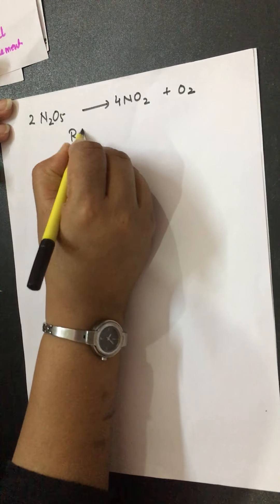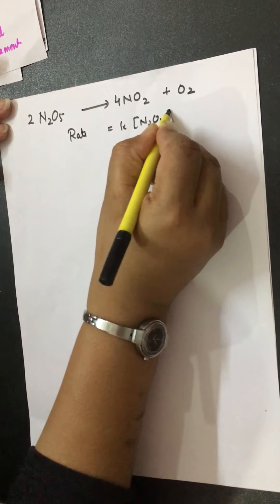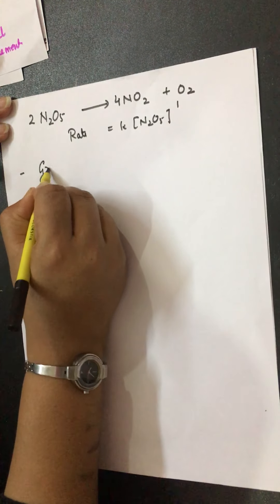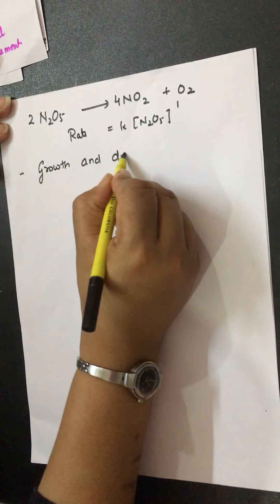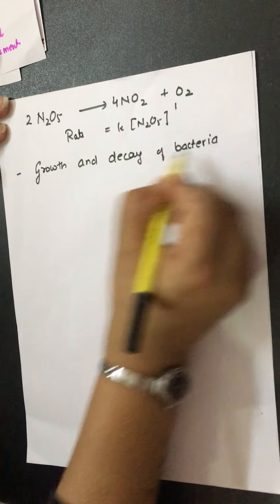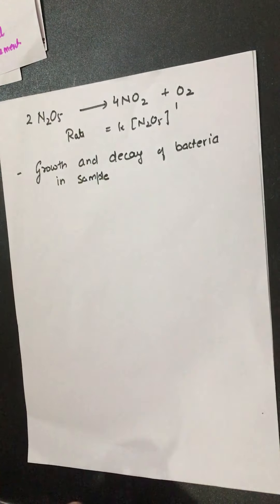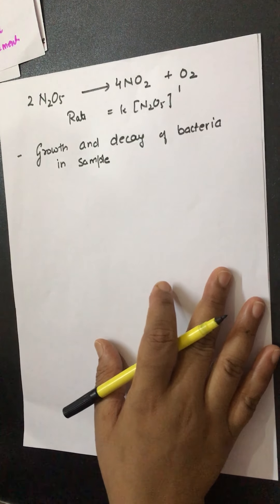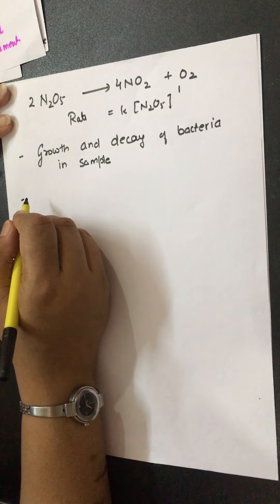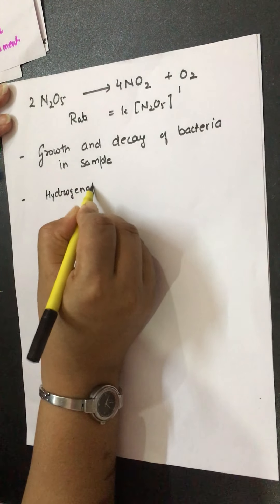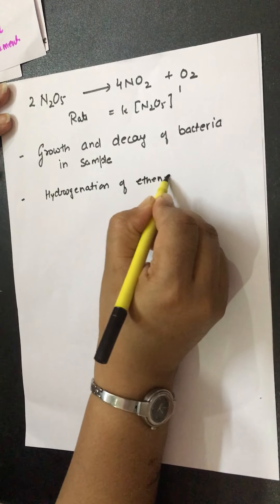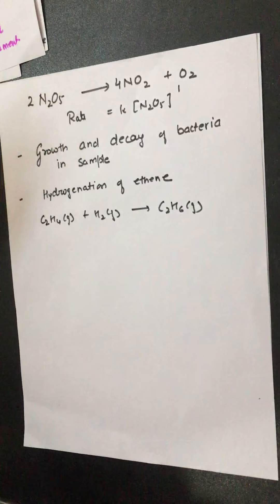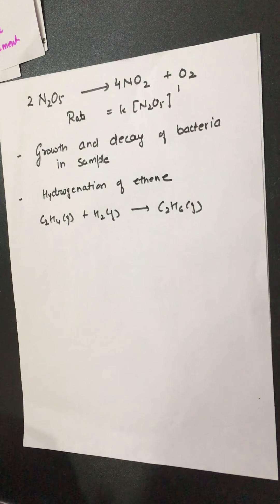Growth or decay of bacteria in a sample also follows first order kinetics — for example, during curd formation, bacteria develop following first order kinetics. Hydrogenation of ethene is another example. There are many examples which follow first order kinetics; these are some of the important and main ones you must remember.